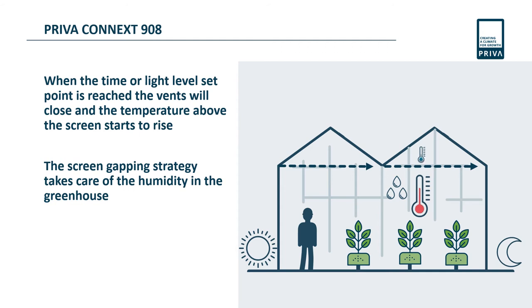When the time or light level set point is reached, the vents will close and the temperature above the screen starts to rise. The screen gapping strategy takes care of the humidity in the greenhouse at that moment.